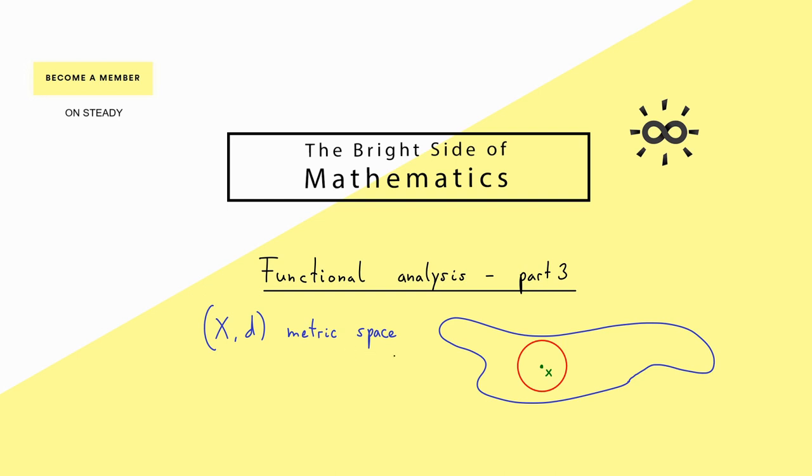Now exactly this notion of a ball is what we want to generalize for an abstract metric space. We write b epsilon x and call it the open epsilon ball around x. It is defined as all the points y in our metric space X that fulfill that the distance from x to y is less than a given radius epsilon.